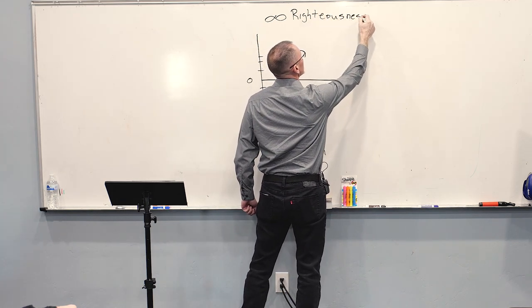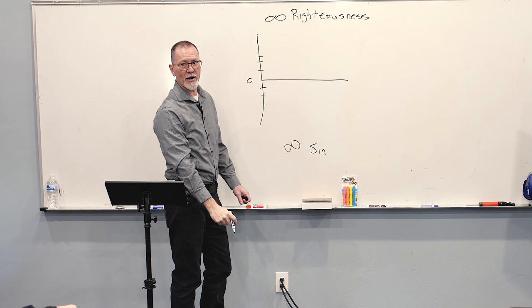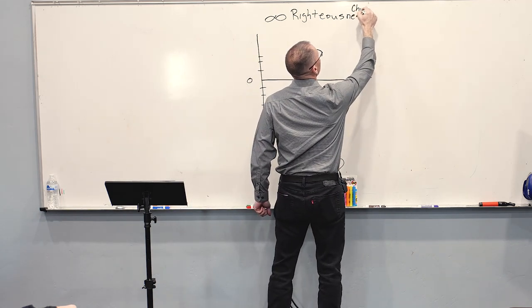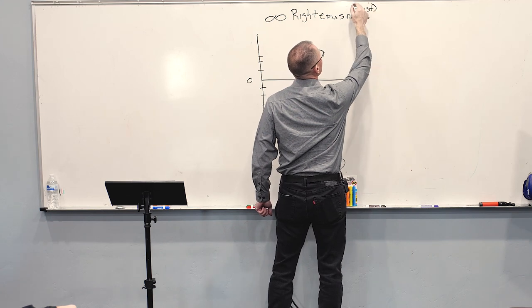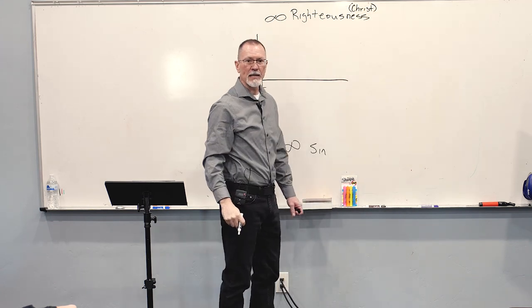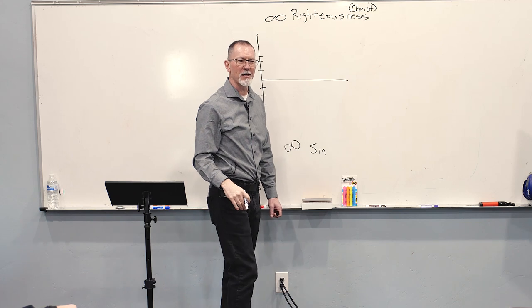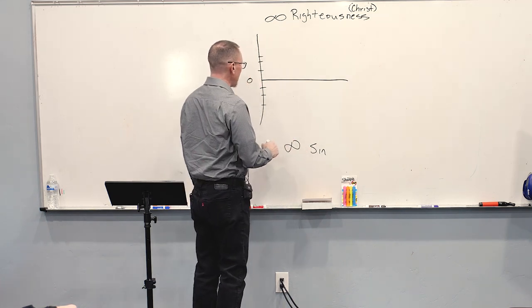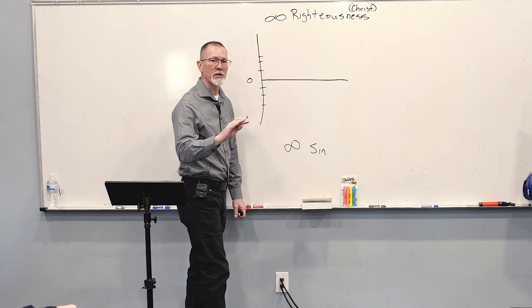Sometimes it's called the double imputation approach, that we're giving him our sin debt, and he's giving us his righteousness. This is basically your doctrine of justification by faith alone. How are you made right with God? I draw it out, so we're going to use a little mathematic. Draw out some perimeters. I always ask, who do you think is infinitely righteous?